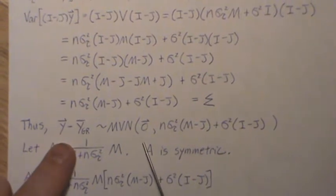So it has this multivariate normal, mean zero, variance-covariance matrix sigma. Write this.